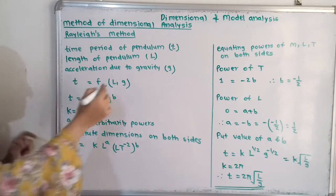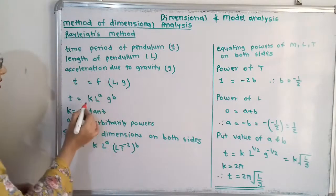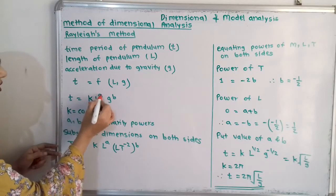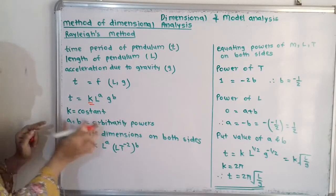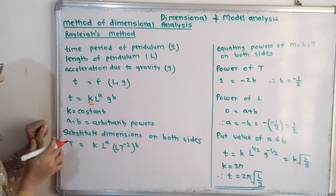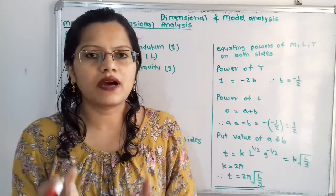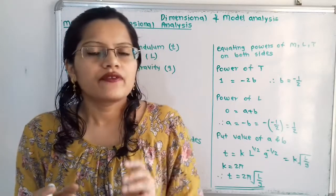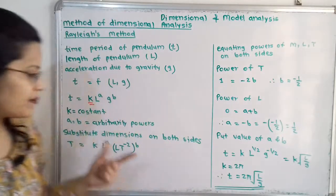We give powers in terms of A and B, where K is known as the constant, and A and B are the arbitrary powers. Now we will substitute dimensions on both sides. The fundamental dimensions are length, mass, and time, that is L, M, and T. With these fundamental dimensions we will substitute the dimensions for each term.